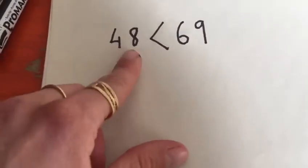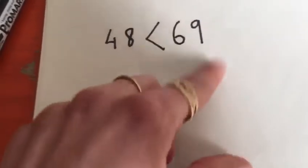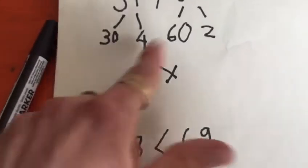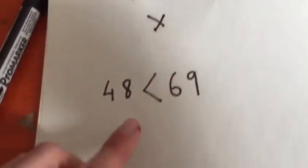This says 48 is less than 69. Now I can either partition that number like I did just there or I can try and do it in my head.